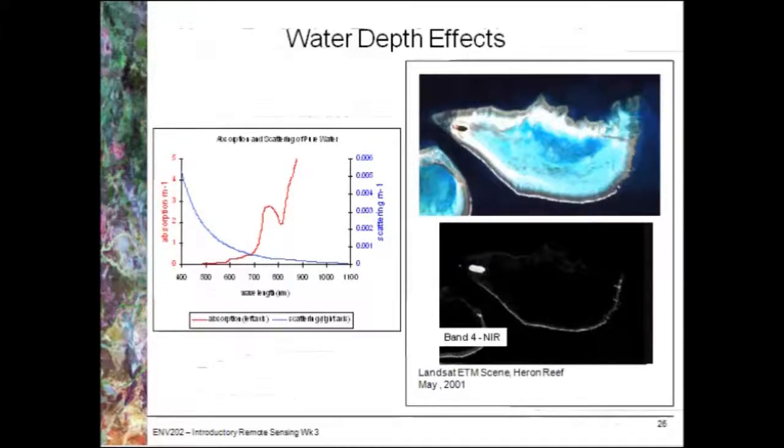You have a look at the near infrared band and you lose all information from the reef with the exception of the island which is vegetated, so obviously has a really high reflectance of near infrared light. And the white edge around the reef here which are the breaking waves and they're reflecting all light regardless of the wavelength.